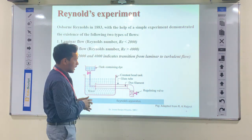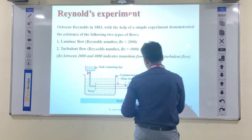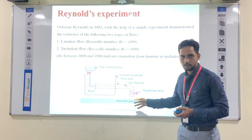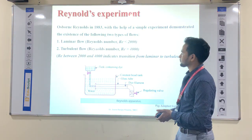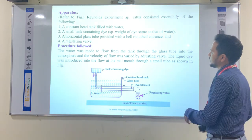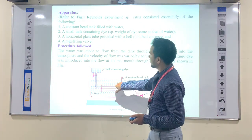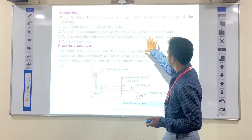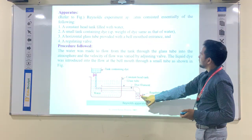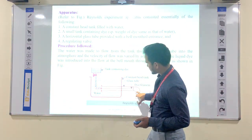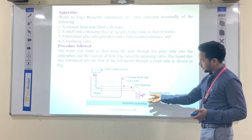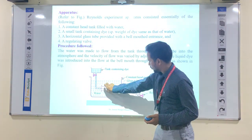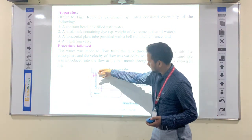A regulating valve controls the flow of the fluid — which is water — at a constant head. A small tank contains the dye, and a horizontal glass tube is provided with a bell mouth entrance. At the exit of the pipe there is a regulating valve. Water flows inside and dye is injected.